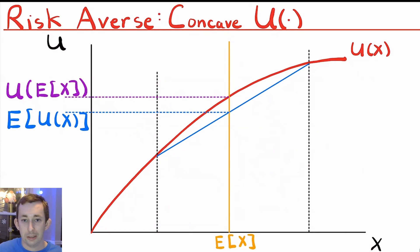Notice that if I tell this risk averse person they're going to get this expected value for sure, they're going to get this purple utility here. This is the utility of the expected value of this gamble.